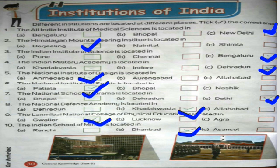The Indian Institute of Science is located in Bangalore. The Vartya San Academy named institution is located in Dehradun. So, write Dehradun in the blank table of serial number four.